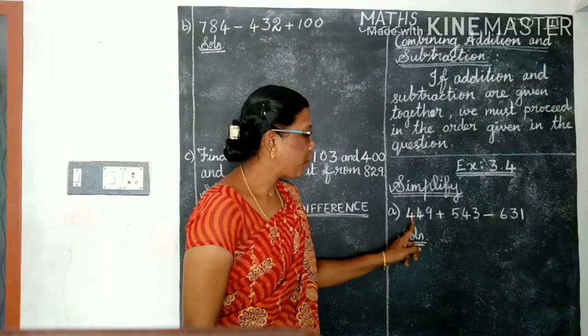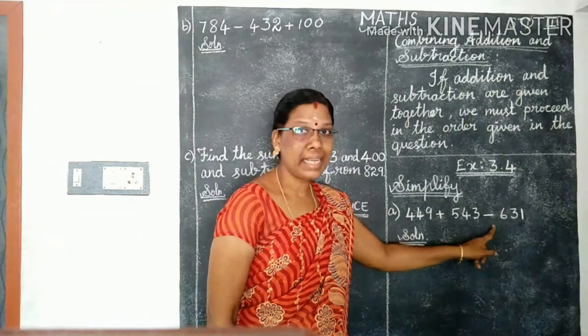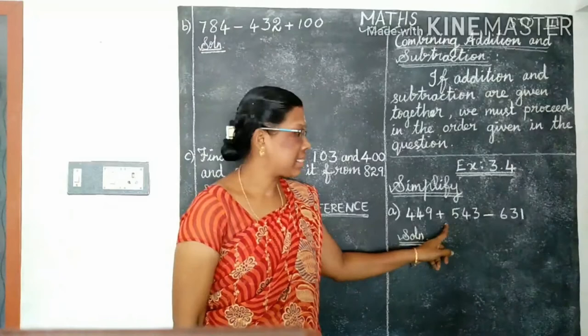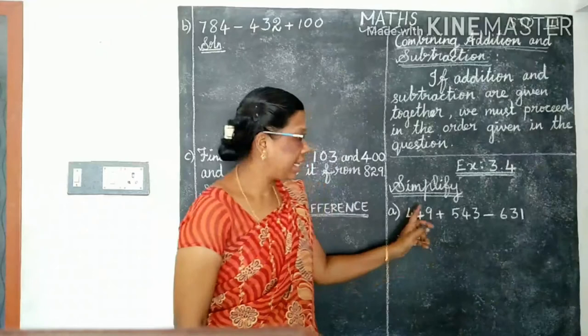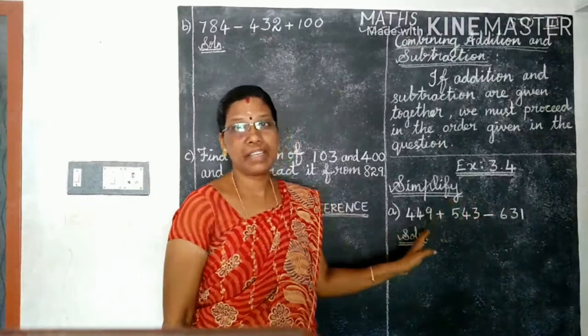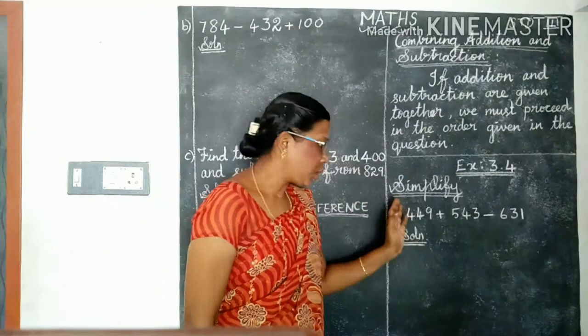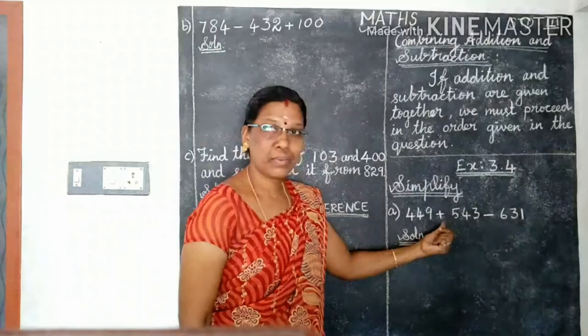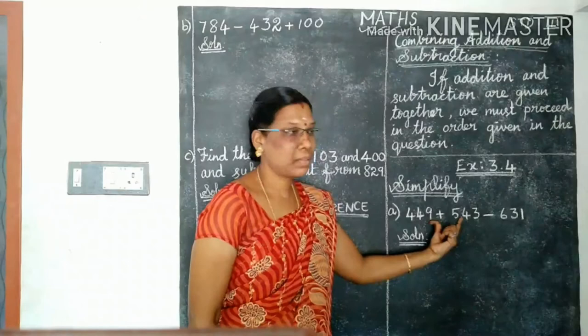The order is very important. Simplify. First one: 449 plus 543 minus 631. See here, addition and subtraction, plus minus, both are given together. So first we need to follow which order they are given. So here first, what is given? Plus, addition. So first add these two numbers.